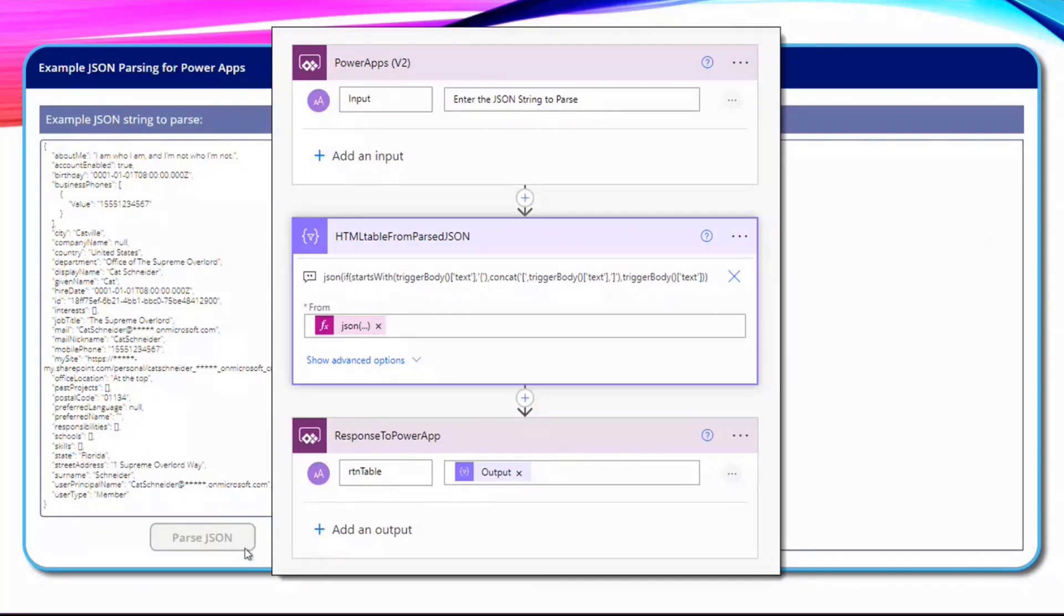If it's a record, I add some square braces, and then I convert it to JSON, feed it to the HTML table, and then feed that output back to the Power App.